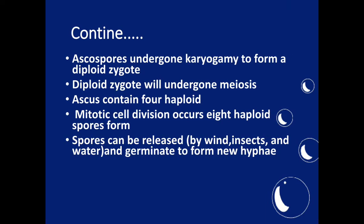Ascus contains eight haploid spores — meiotic cell division occurs and eight haploid spores are formed. Spores can be released with the help of wind, insects, or water, and then the spores germinate to form new hyphae.